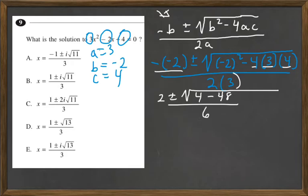Now let's simplify this some more. This is going to be 2 plus or minus the square root of 44, which is the same as taking it times the square root of 4.